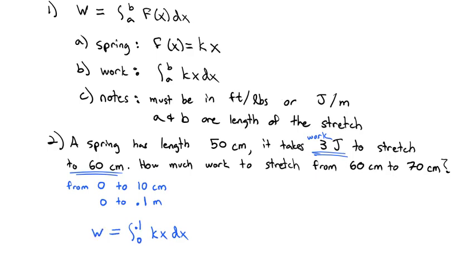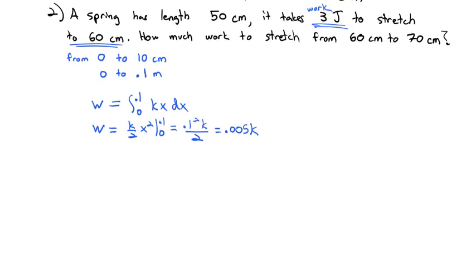Our work is the integral from 0 to 0.1 of kx dx. Evaluating this, keeping k as a constant, the work is k/2 times x² integrated from 0 to 0.1, or 0.1² times k/2, which is 0.005k. They give us the amount of work: 3 joules. So 3 = 0.005k, and dividing both sides by 0.005, we find the stretch constant k = 600.